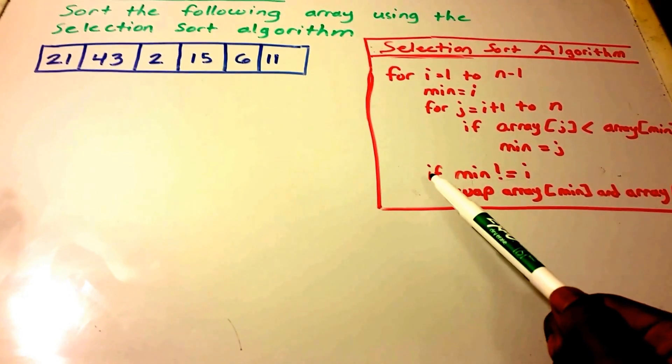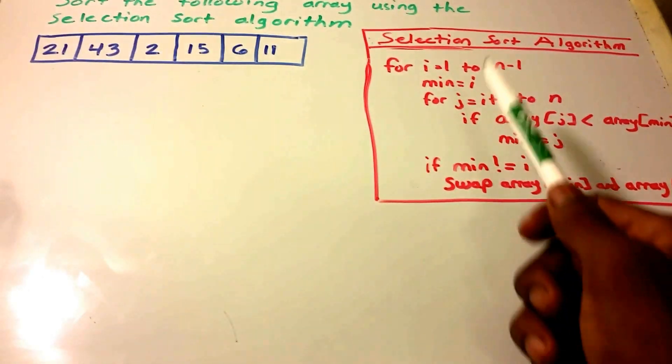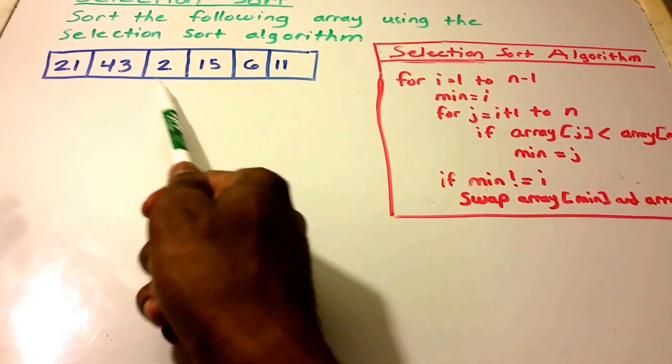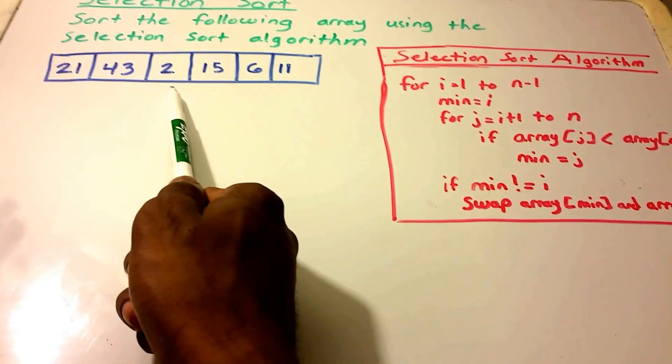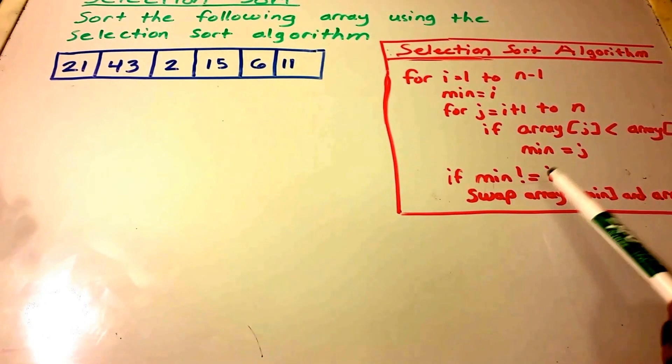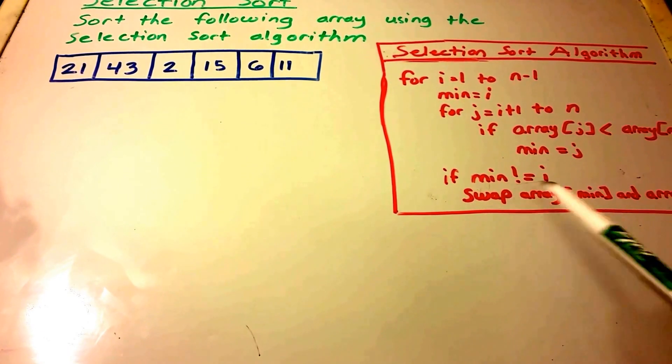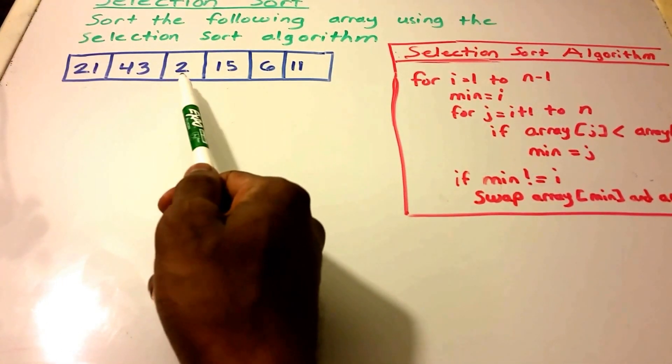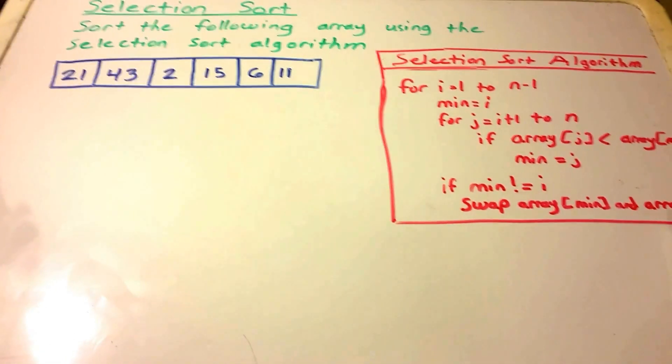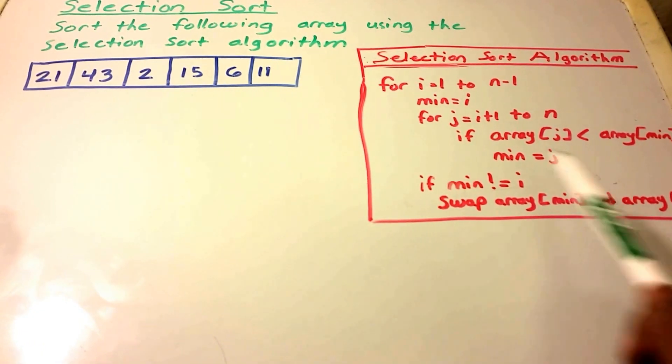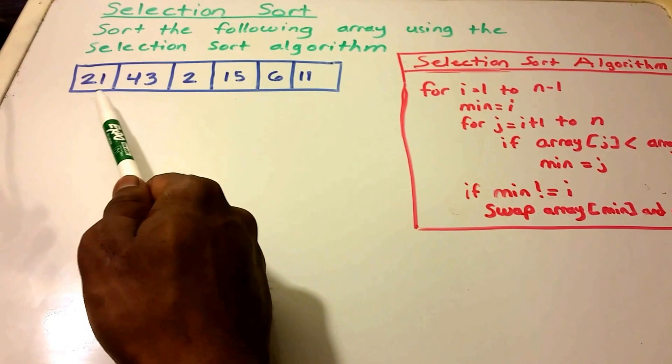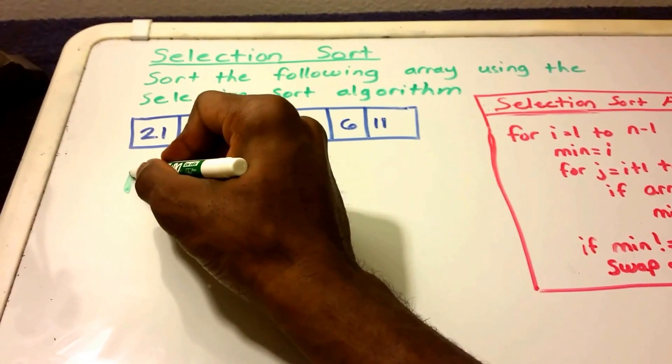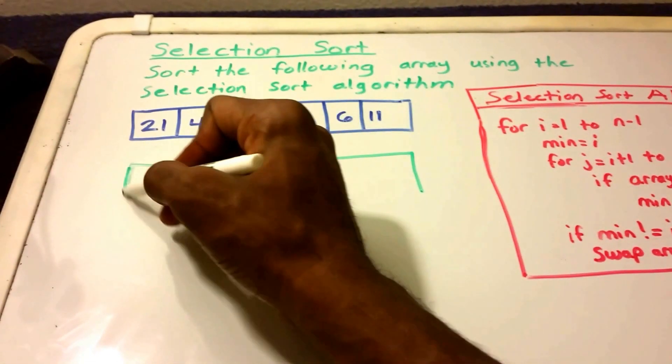And we're going to go to this if statement, and we're going to say if min does not equal i, which was, right now, currently our i value is still here. It's still the 21. So if min does not equal i, and it doesn't, 3 does not equal 1, then we're going to swap the two elements. So we're going to swap the element at array position min, which is here, the 2, with the array at position i. So the array at position i is 21. So we're going to swap the 2 and the 21. So let's go ahead and do that.